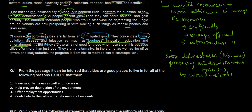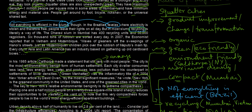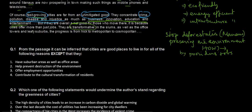Fast-growing cities are far from an unmitigated good. They concentrate crime, pollution, and injustice as much as they contribute to business, innovation, education, and entertainment. These are the positive sides and crime, pollution, disease, injustice are the negative aspects. But if they are overall a net good for those who move there, it is because cities offer more than just jobs — they are transformative. If you remember, in the first line we had the keyword gradual improvement or transformation, and this is reinforced in the last paragraph as well.